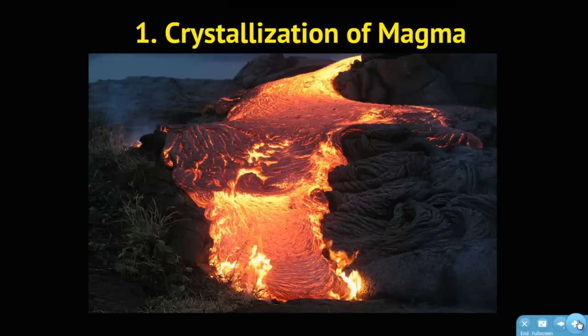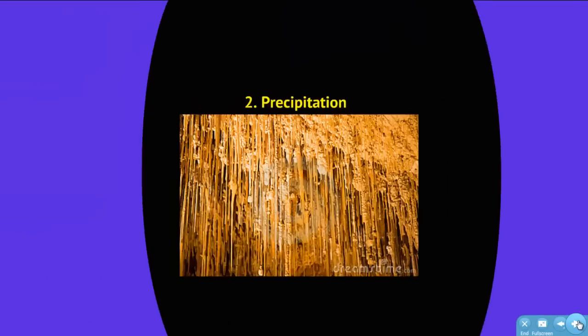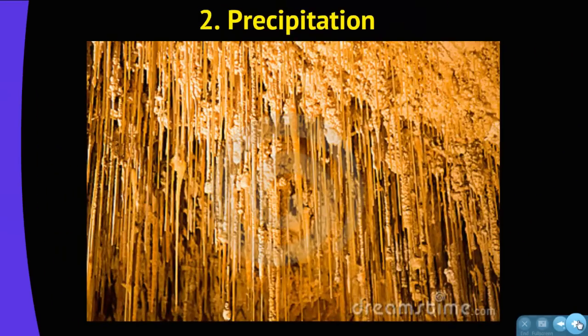You could also have water carrying around dissolved minerals like calcium carbonate. When that calcium carbonate leaves solution — similar to leaving salt water out until the water evaporates and leaves behind the salt — the same thing happens with water and dissolved minerals. This is a picture of stalactites, which occur when rainwater or groundwater precipitates out calcium carbonate.